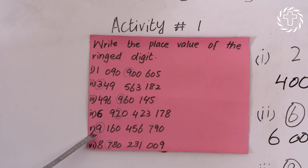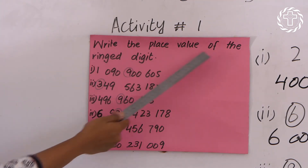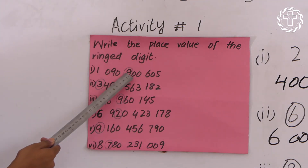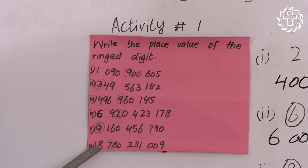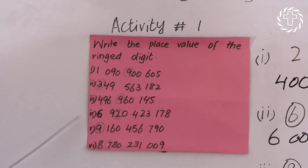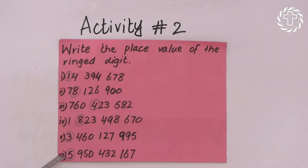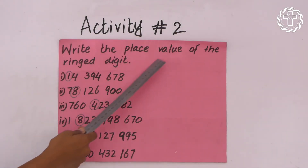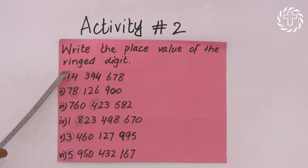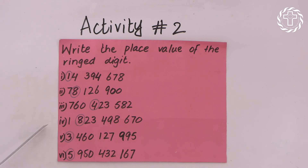This is your first activity — write the place value of the ringed digits. These digits are all ringed, so copy these questions in your notebook. This is also your home activity — write the place value of the ringed digits and copy these questions in your notebook.